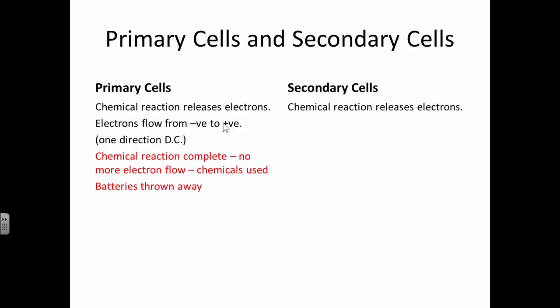Secondary cells, however - there's a chemical reaction that releases electrons. The electrons flow from negative to positive. It's in one direction again. But in a secondary cell, the reaction can be reversed.